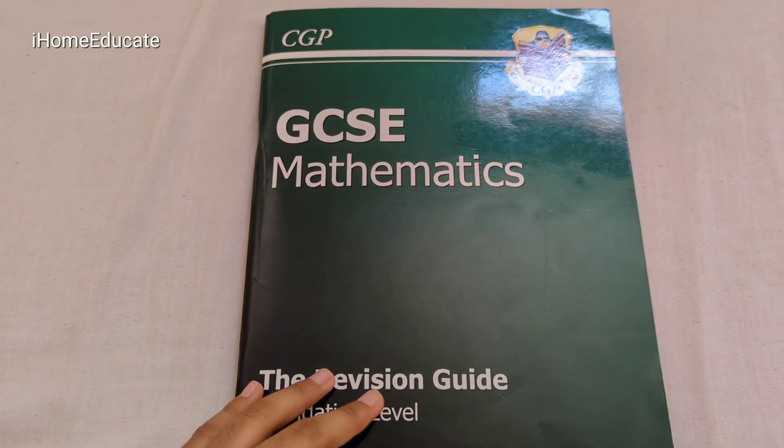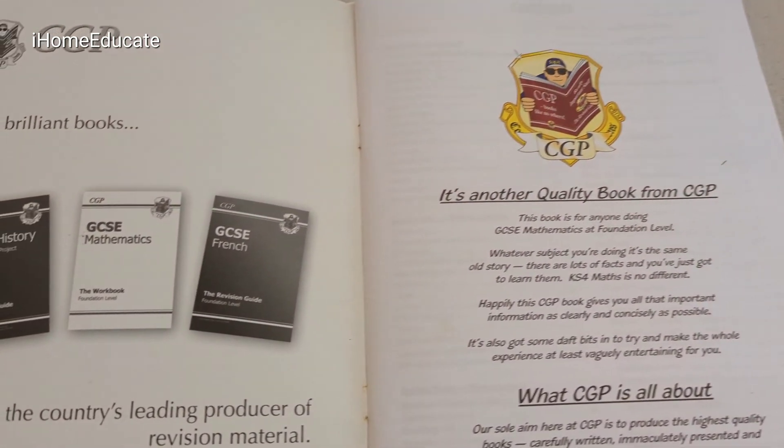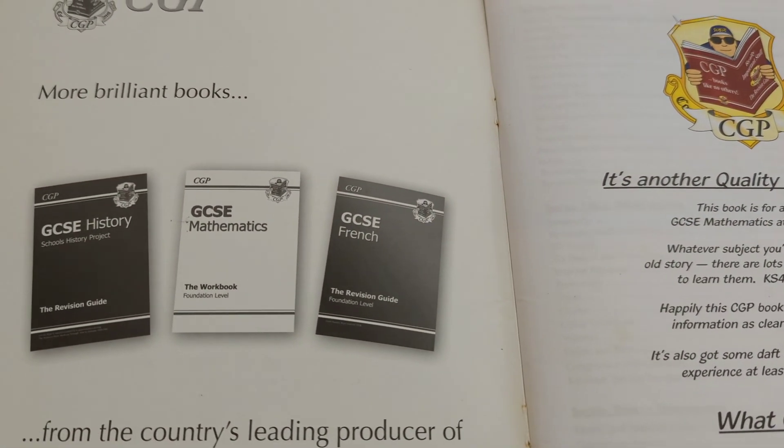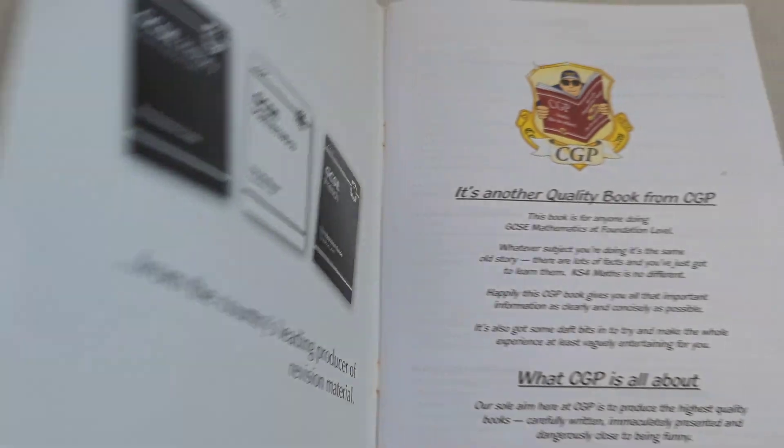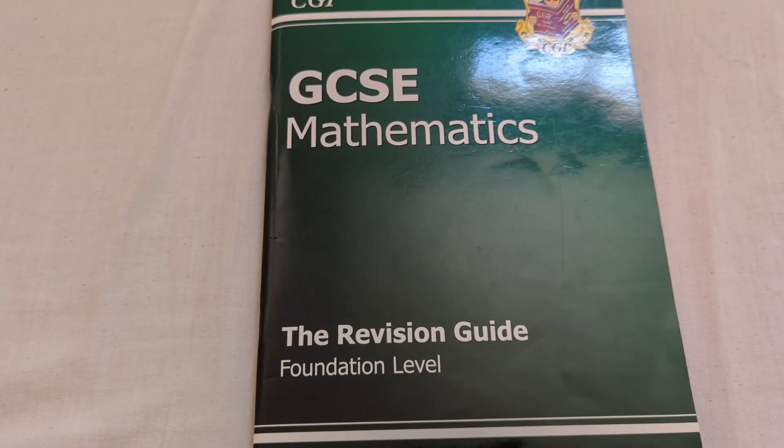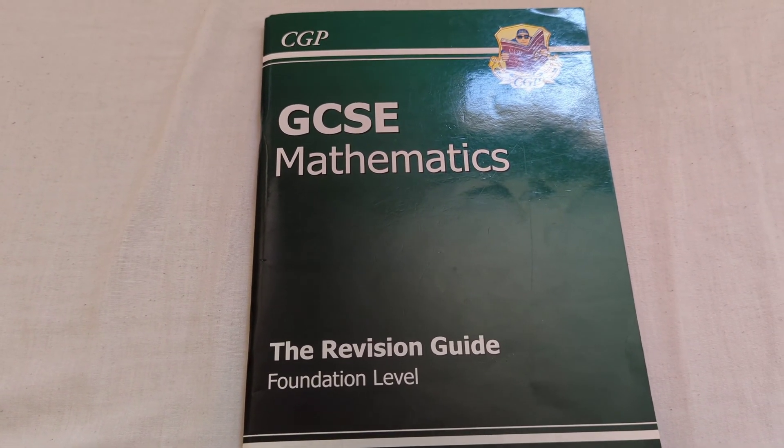You can probably get this as different subjects as you can see here. You can get them in French or just history. But this is the Mathematics GCSE CGP Revision Guide.